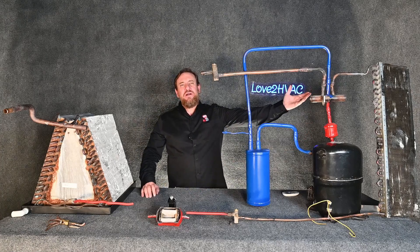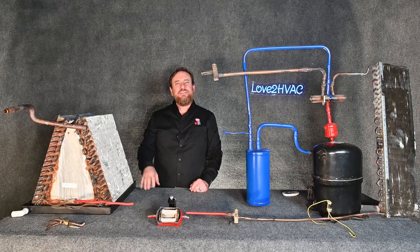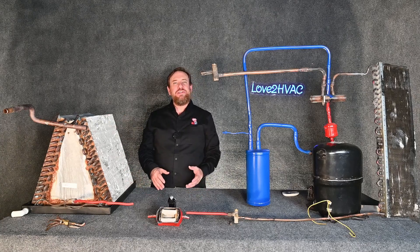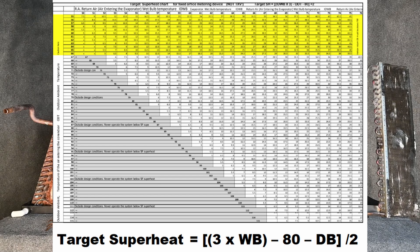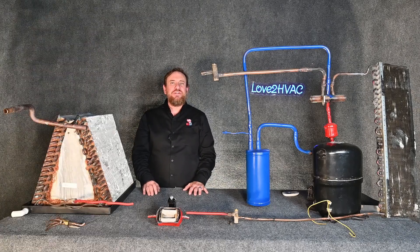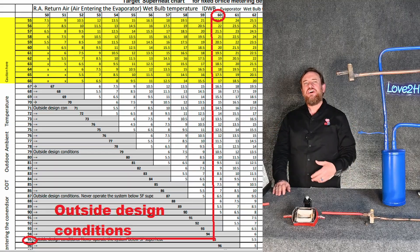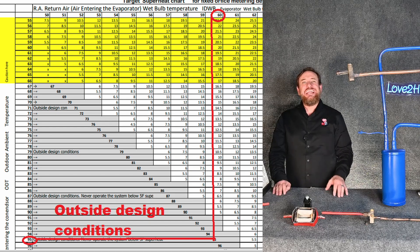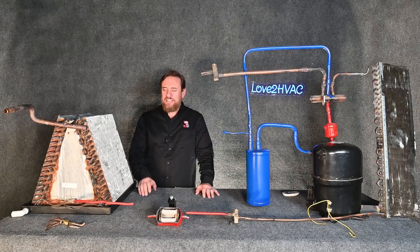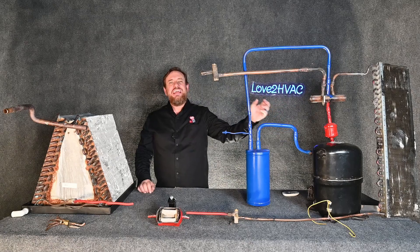In AC mode as the outdoor temperature rises we have more pressure pushing more refrigerant through that metering device, which affects how much liquid refrigerant is in the evaporator. The indoor temperature and humidity also affect how fast that refrigerant boils from liquid to vapor inside the evaporator coil. That's why in summer we need the target superheat chart with outdoor dry bulb and indoor wet bulb. For example, on a 95-degree outdoor day at 73 degrees inside at 50% relative humidity, the target superheat can calculate to below zero, meaning under those conditions a correctly operating system would flood the evaporator with liquid refrigerant.